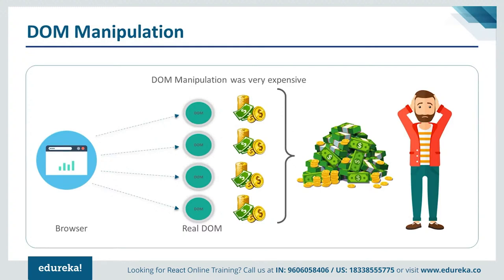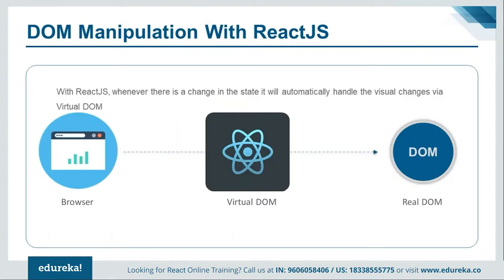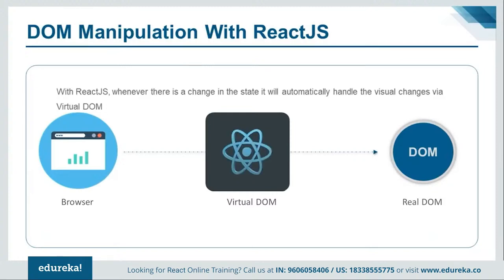A main challenge in web development is DOM manipulation, which turns out to be very expensive. The DOM represents how the HTML looks, and traditionally changes to the DOM required iterating through the entire DOM structure, which took a huge amount of time for large DOM structures. React tried to change this by introducing an additional layer called the virtual DOM, which sits between the browser and the actual DOM.